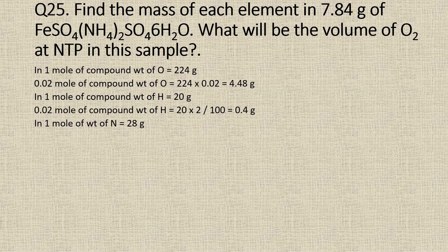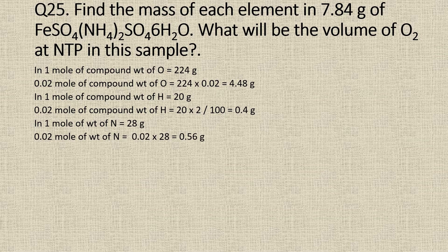The number of moles of nitrogen is 2. Therefore, the weight of nitrogen is 28 grams. So, 1 mole of the compound contains 28 grams of nitrogen. So, 0.02 moles of the compound will contain 0.02 into 28, which is equal to 0.56 grams of nitrogen.